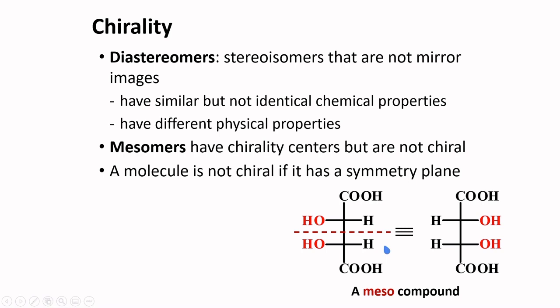You will encounter many compounds that are meso compounds. For example, this 1,2-cis dimethyl cyclopentane is a meso compound because it has a symmetry plane that bisects the molecule into two mirror images.